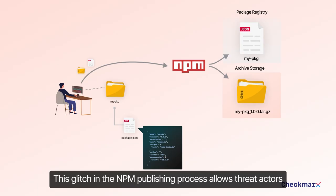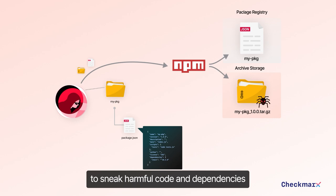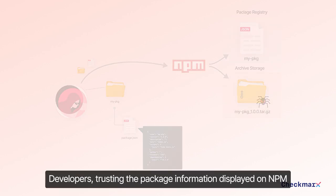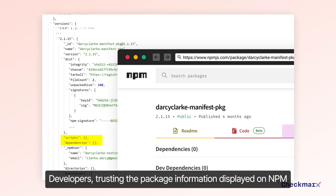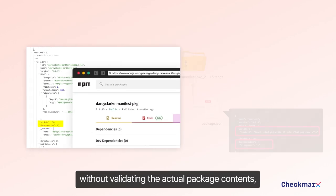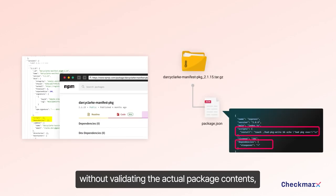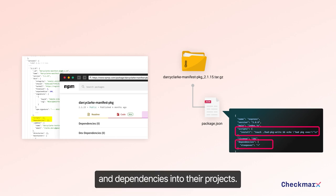This glitch in the NPM publishing process allows threat actors to sneak harmful code and dependencies into seemingly harmless packages. Developers trusting the package information displayed on NPM without validating the actual package contents may unknowingly introduce this malicious code and dependencies into their projects.